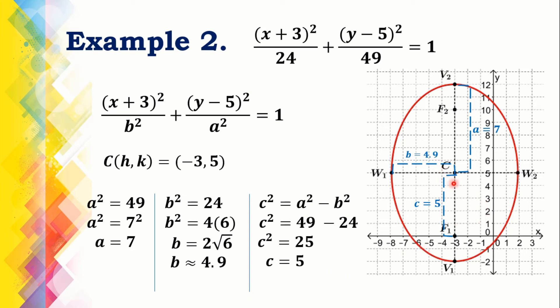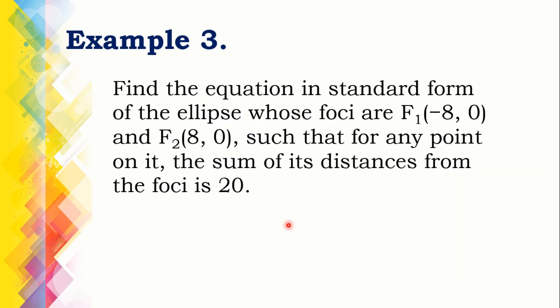From the center, the distance to a focus is 5 units, the distance to a vertex is 7 units, and the distance to a co-vertex is approximately 4.9, which is almost 5 units.